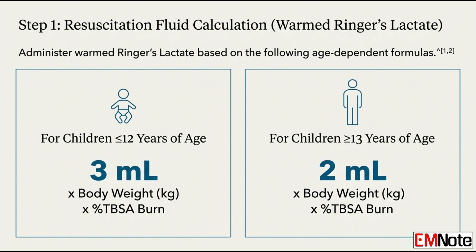So 3 milliliters per kilogram per percent — that's the defining calculation for this younger group. If children 12 and under get 3 milliliters, what's the adjustment for adolescents, patients 13 years and older? Patients age 13 and up transition to the lower rate. They require 2 milliliters per kilogram per percent total body surface area. And this just recognizes that their physiology, their volume capacity, is all starting to approach that of an adult.